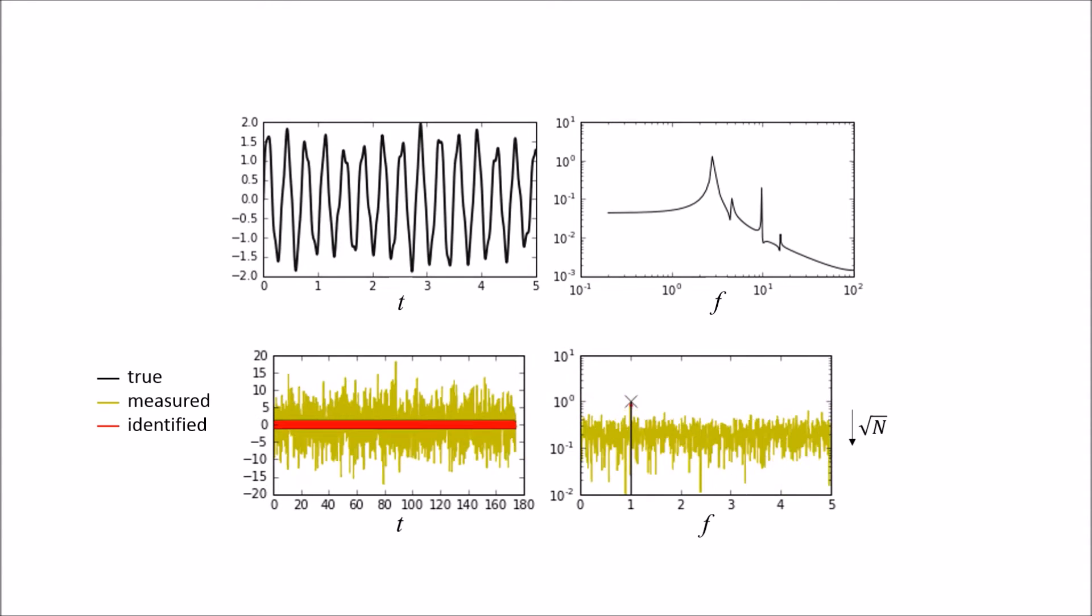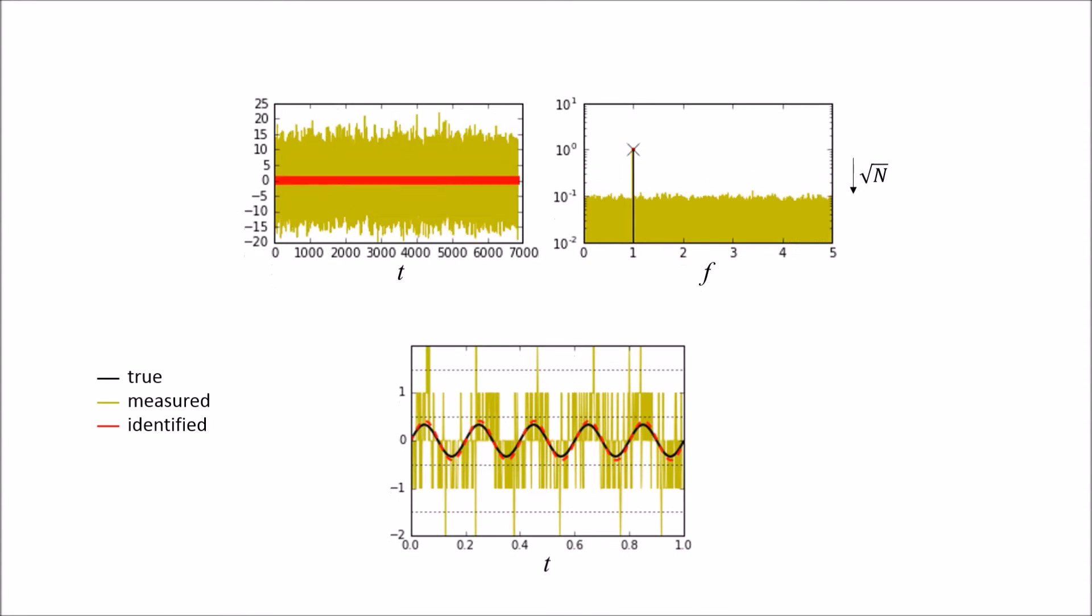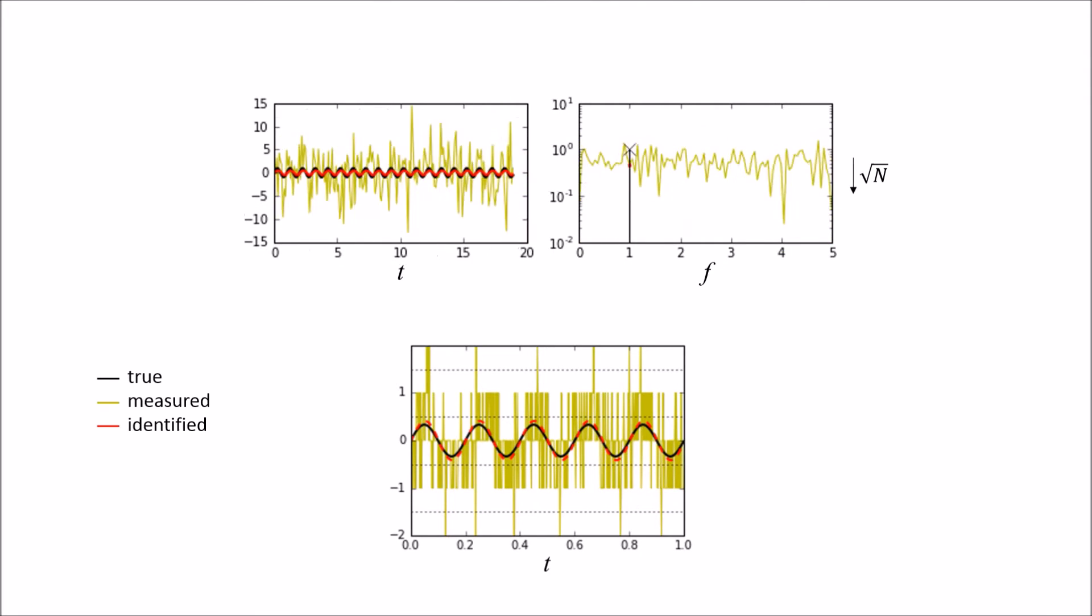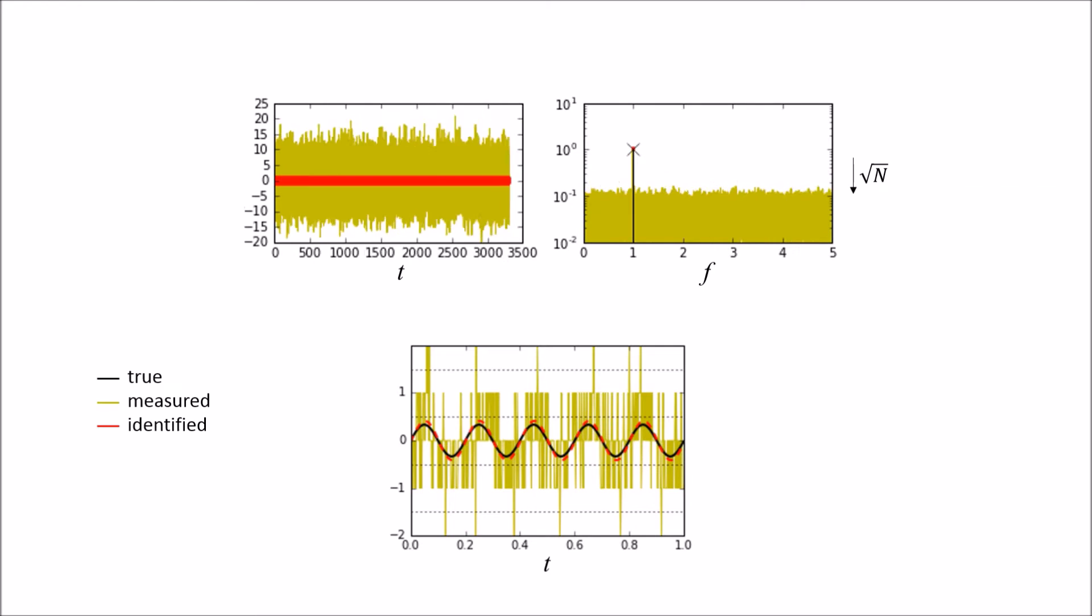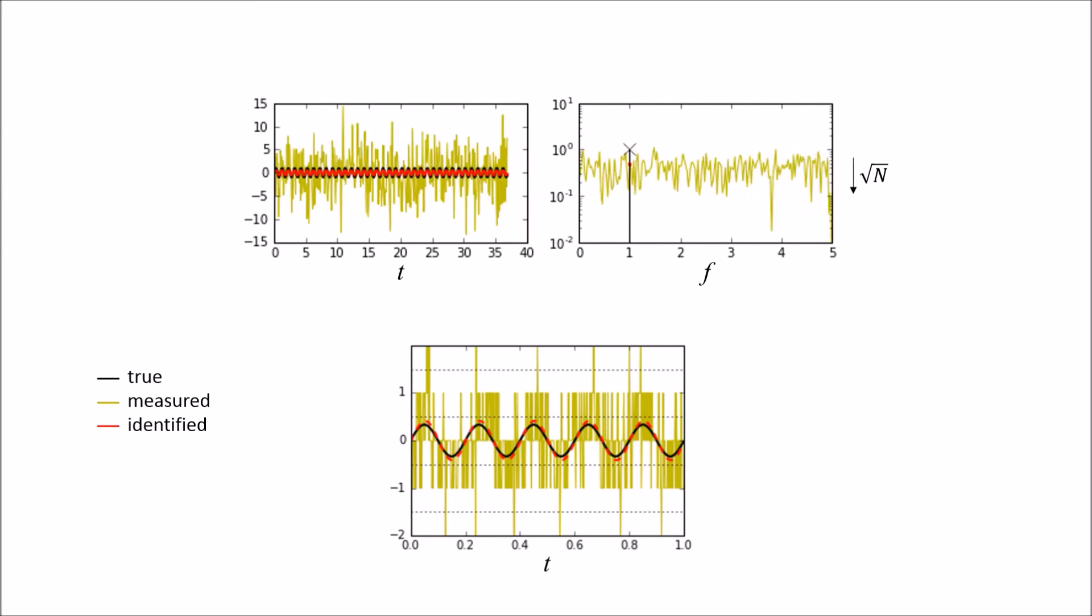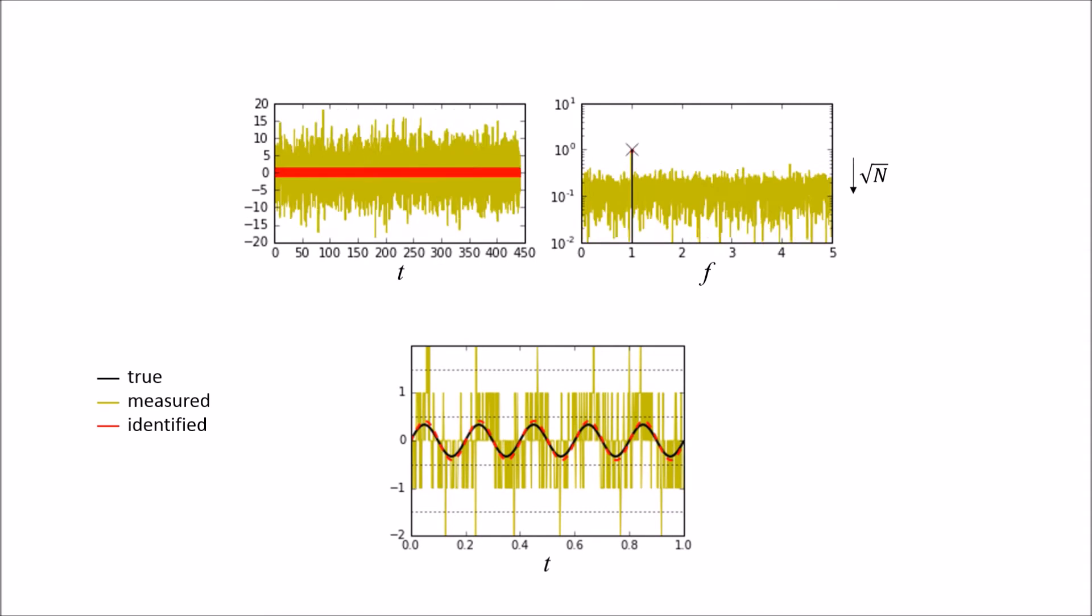This is because a signal that is otherwise too small to cause a change of state can be superimposed on a carrier, helping it to cross the quantization level. The carrier can be another signal or even noise. This concept is known as noise dithering.